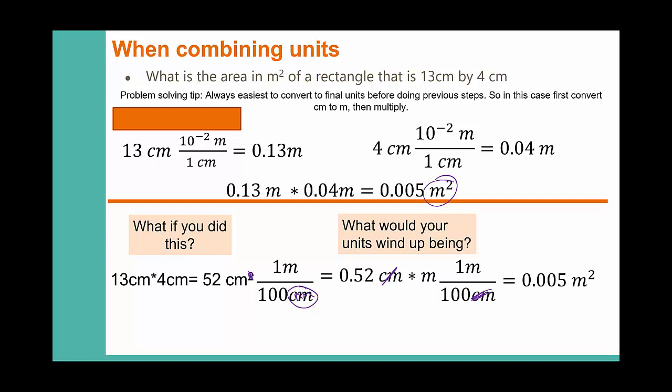In reality, we tend to combine these steps because that's a little bit long-winded. So how we actually tend to do these problems is we would take our 52 centimeters squared and we would square the entire conversion factor. So you're taking your 1 over 100 and you're squaring the entire thing, which means you square the numbers and you square the units. When we do this, all of our centimeters squared would cancel. We're left with 0.005 meters squared. So you can use this for any type of unit where it's squared or cubed. You just have to remember to square or cube the entire conversion factor, numbers included.